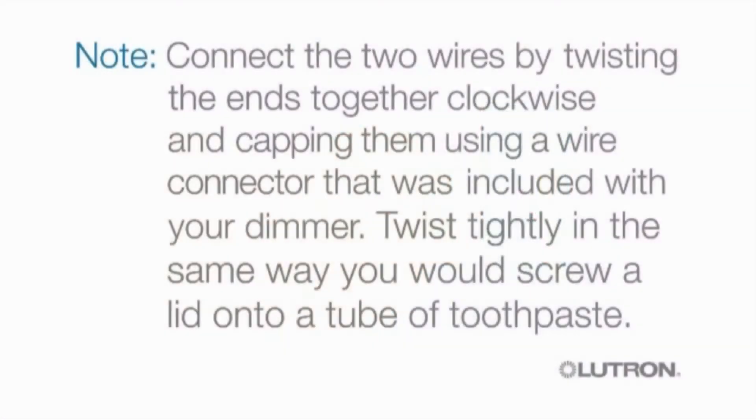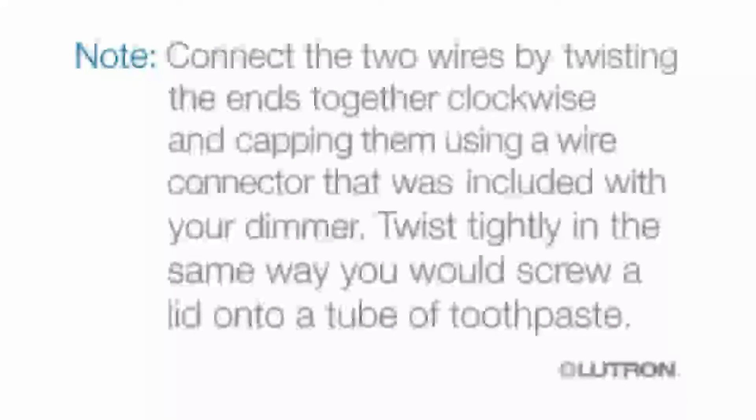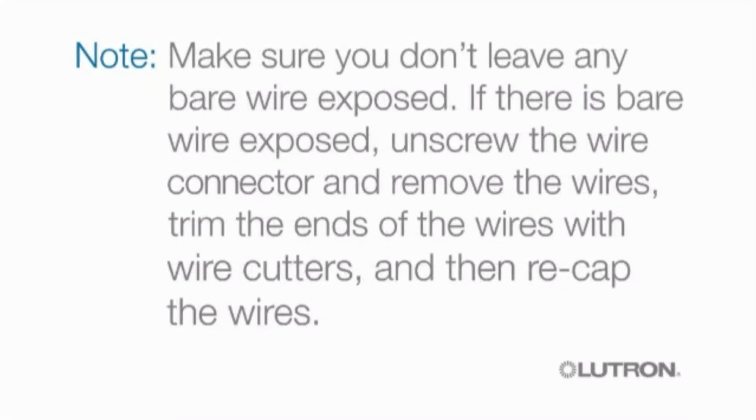Connect the two wires by twisting the ends together clockwise and capping them using a wire connector that was included with your dimmer. Twist tightly in the same way you would screw a lid onto a tube of toothpaste. Make sure you don't leave any bare wire exposed.